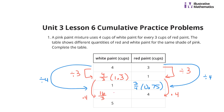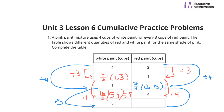Some equivalent versions of 16 thirds: if you wanted to write 5 and 1 thirds, that is the same, as is 5.3 repeating — not 5.3, just 5 decimal point 3 repeating if you absolutely need the decimal form. To get to 5, using the white paint where we have 1, multiply by 5 — so multiply 3 fourths by 5 to get 15 fourths, which is the same as 3 and 3 fourths, or 3 and 75 hundredths.